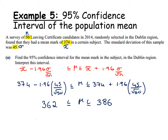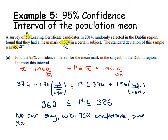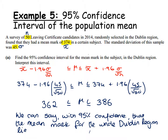Working that out and rounding to the nearest whole number since we're talking about points, we get 362 ≤ mu ≤ 386. To interpret: we can say with 95% confidence that the mean mark for the whole Dublin region lies between 362 and 386. Our population in this case was the whole Dublin region — it was a sample from just the Dublin region — so that's what they would look for when asking us to interpret the interval.